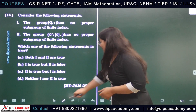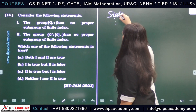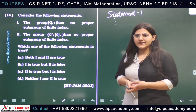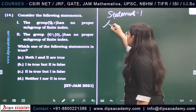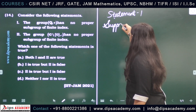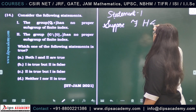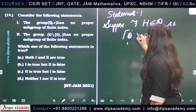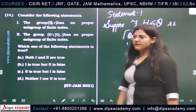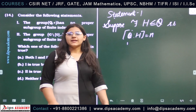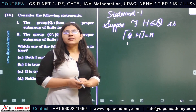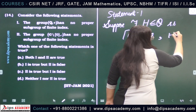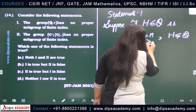For statement one, we have to check whether Q+ has a proper subgroup of finite index or not. We will prove it by contradiction. Suppose if possible there exists H, a proper subgroup of Q, such that H has finite index, say N. Since H is a proper subgroup of Q, this N is strictly greater than one.